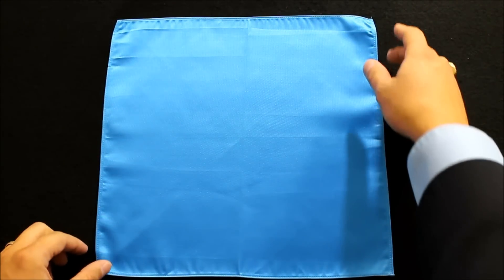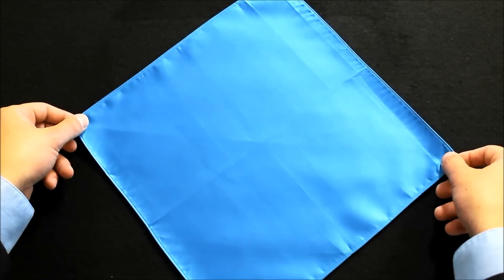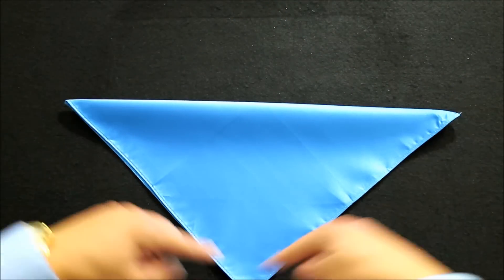Taking your pocket square, you're going to take it from one corner to the opposite corner, make it like a diamond, and then you're going to fold that in half like so, making a triangle.